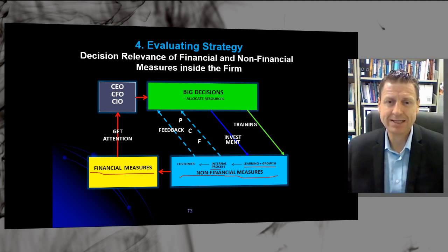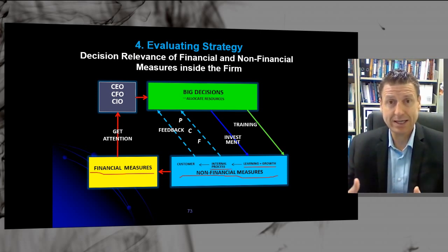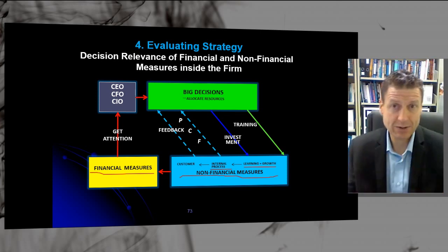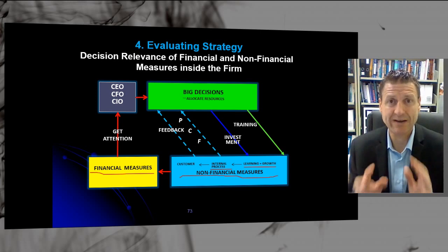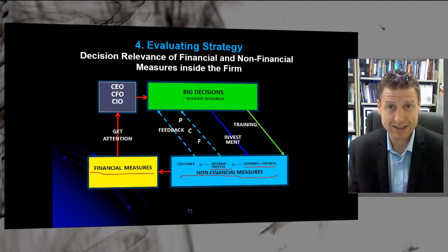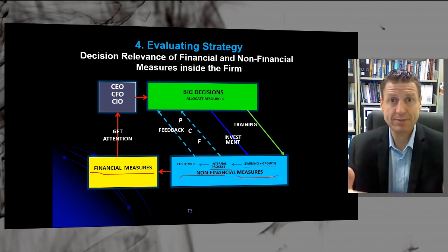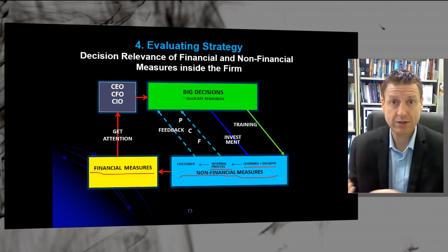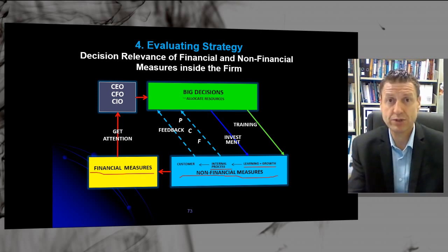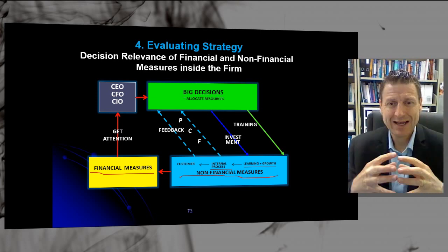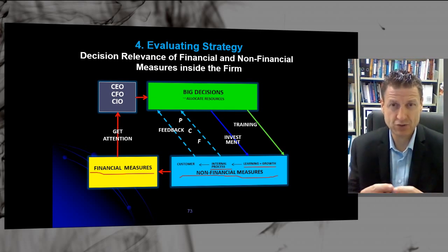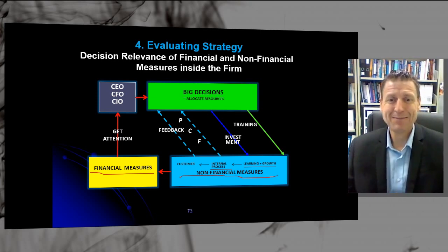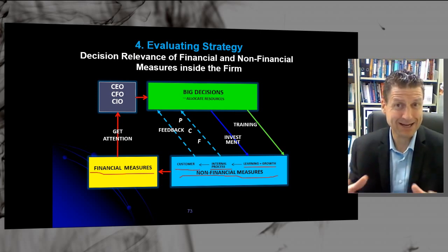What about internal process? There are important measures here too — quality, lead time, throughput time, cycle time. There are a lot of time measures involved in the internal process. For example, what is the lead time to get a website up for a client, or the lead time to produce a container load of goods for export to the USA? Internal processes are very much time-driven and quality-driven. And of course, there's the customer — another part of the Balanced Scorecard.